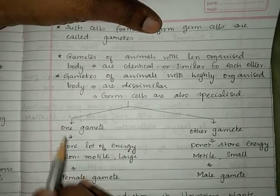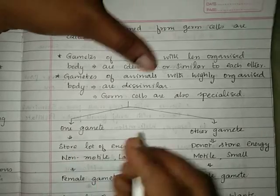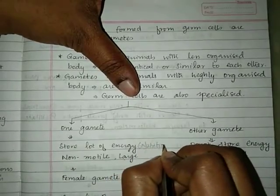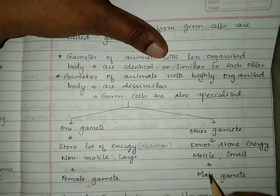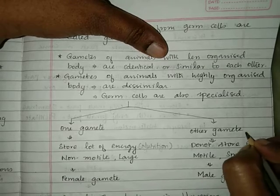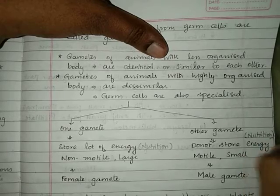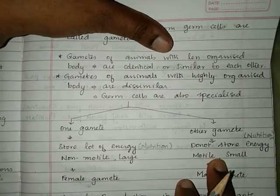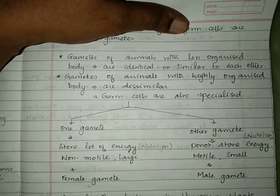In highly organized animals, gametes are dissimilar. The female gamete is large in size, non-motile, and can store a lot of nutrition. The male gamete is motile, very small in size, and does not store any nutrition. Such gametes are called dissimilar gametes, usually formed in animals with highly complex body structures.